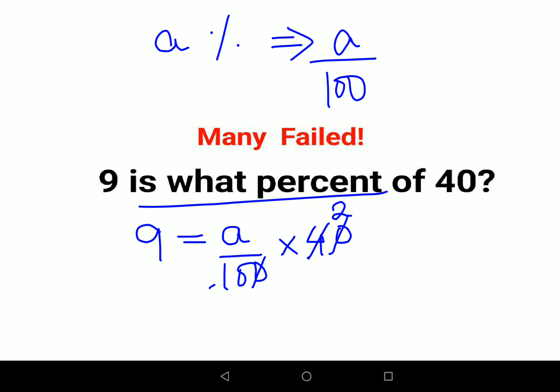so 2 and 5. So now basically what we have got over here is 9 equals to 2A upon 5.